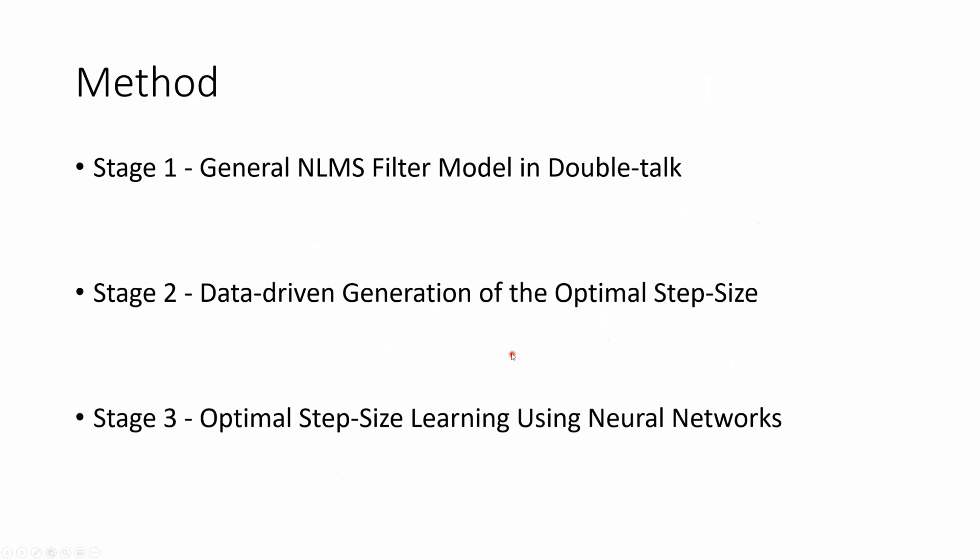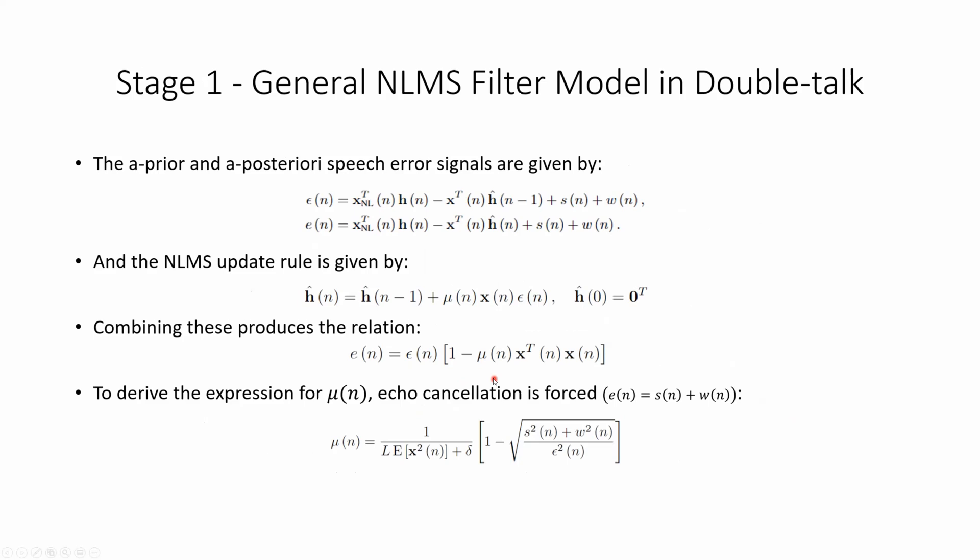We practically implemented this method in three stages. Stage one is modeling the NLMS filter in double-talk. The first stage is taking into account the a priori and a posteriori error signals and the NLMS well-known update rule. Combining these three equations provides this relation between the a posteriori and the a priori error signals, and from that it's pretty straightforward to derive the optimal step size if we force echo cancellation from the error, namely that it equals only the speech and the noise.